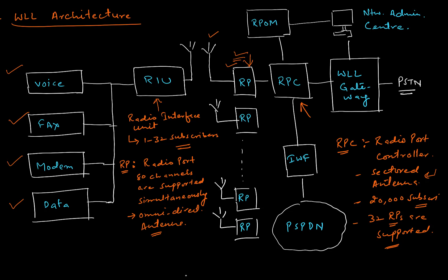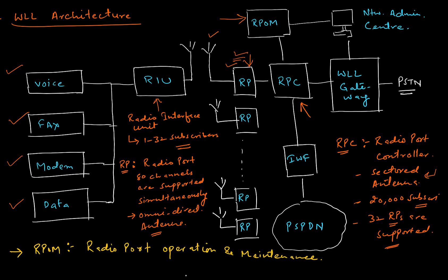At the top, we have RPOM, which stands for Radio Port Operation and Maintenance. All maintenance and operations are controlled by this RPOM because it is directly connected to the network administration center, where network engineers can control the whole architecture through this RPOM unit.